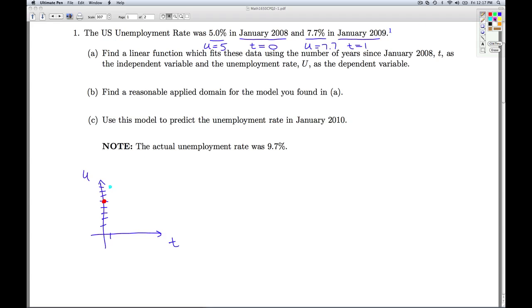Oops. Missed it. Okay. So I've got the point 0, 5, and the point 1, excuse me, 0 comma 5, and then the point 1 comma 7.7. Okay. So these two points determine a line. And so that's what A is talking about. I want to find the linear function that fits these data points.